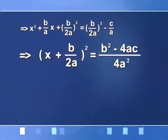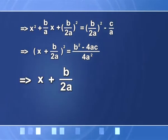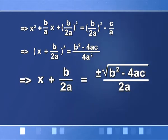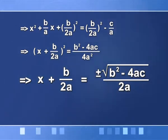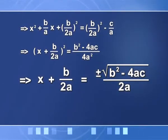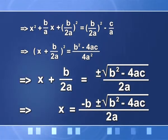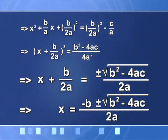Shifting B/2A to the right hand side, I get x = [−B ± √(B² − 4AC)] / (2A). These are the two values of x: [−B + √(B² − 4AC)] / (2A) and [−B − √(B² − 4AC)] / (2A). I completed the square on the left hand side by one method, and I intend to show you another different method which is faster.